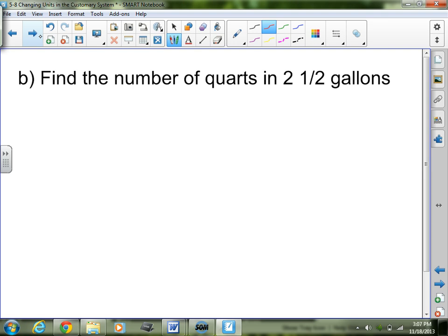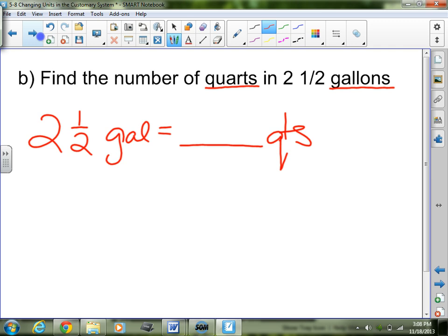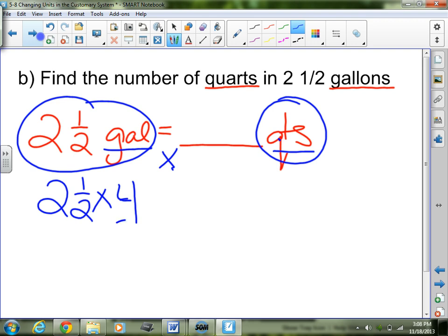Find the number of quarts in 2 and a half gallons. This time we are trying to find the smaller one. I know that quarts are smaller than gallons. So I have 2 and a half gallons equals how many quarts? I'm going from the big one to the smaller one. Whenever I go from the big unit to the smaller unit, I multiply. So how many quarts are in one gallon? Well, there are 4 quarts in one gallon. So I'm going to take 2 and a half times 4.